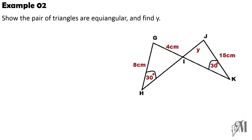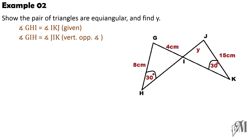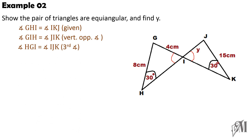In the next example, we must show that a pair of triangles are equiangular and find Y. Only one angle is equal according to the data: angle GHI equals angle IKJ, both equal to 30°. Then angle GIH and angle JIK are vertically opposite angles, so these two angles are equal. The remaining angles GHI and IJK are equal as the third angles. Therefore the two triangles are similar, and once similarity is proved we can write the proportionality.